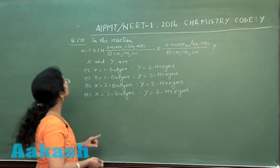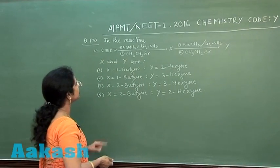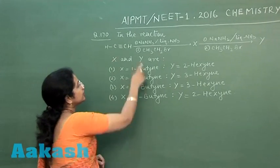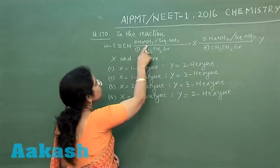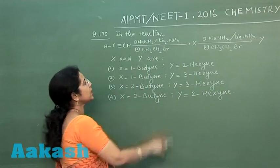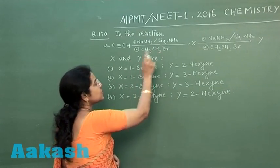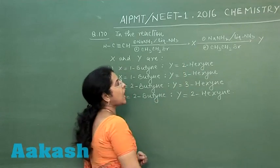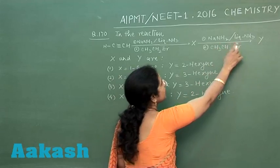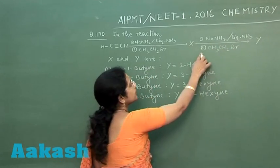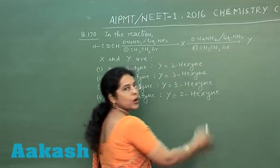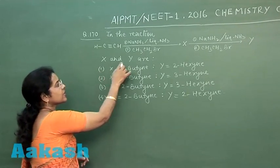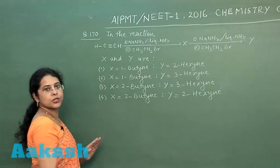Proceeding to the next question, question number 170. In the reaction, ethane reacts with sodium amide in liquid ammonia, then with CH3CH2Br to form product X. Again, reaction with sodamide in liquid ammonia and treatment with ethyl bromide produces Y. In this question we have to find X and Y. Four options are given.